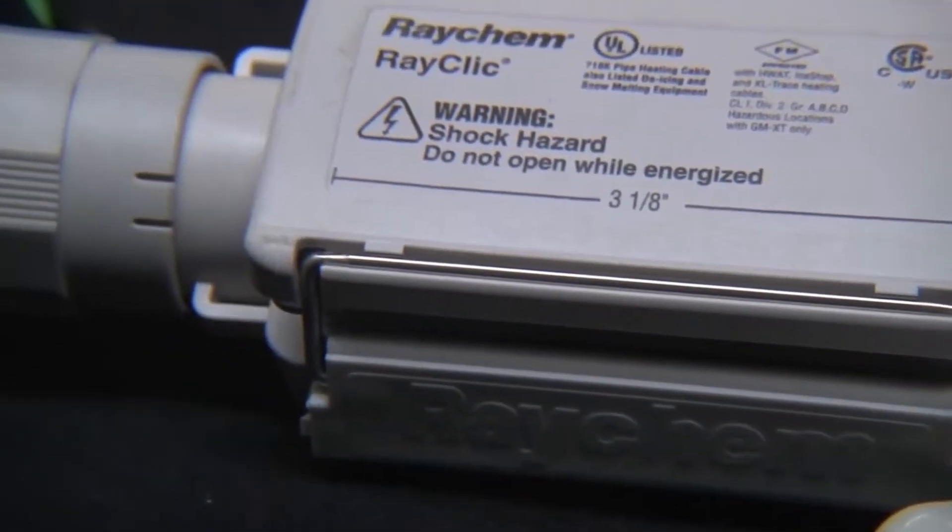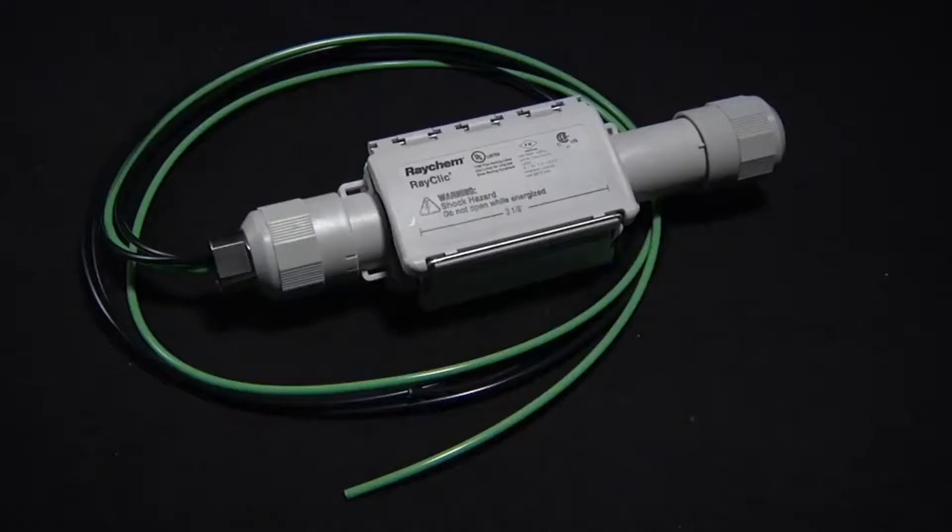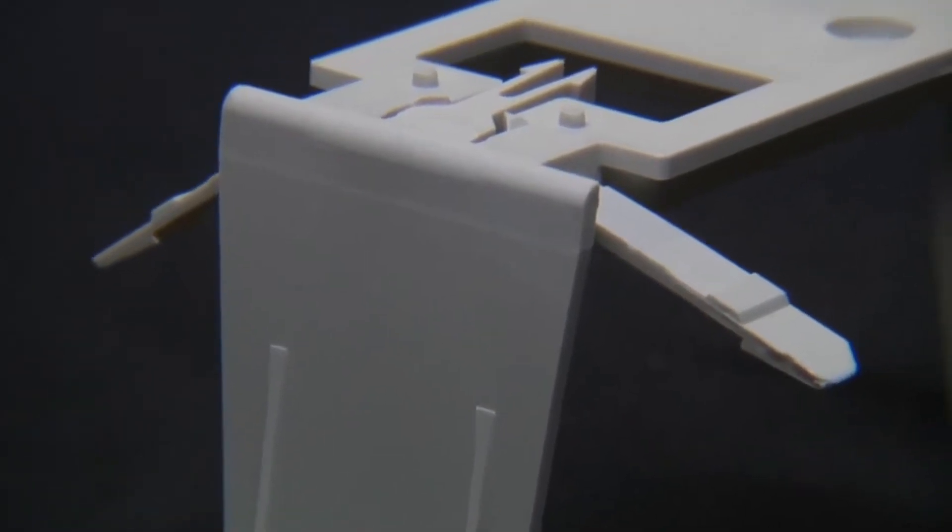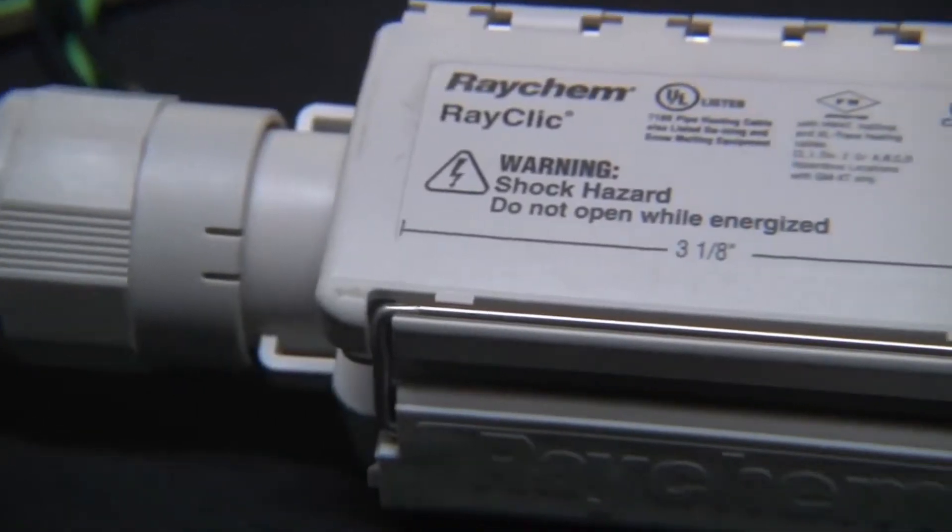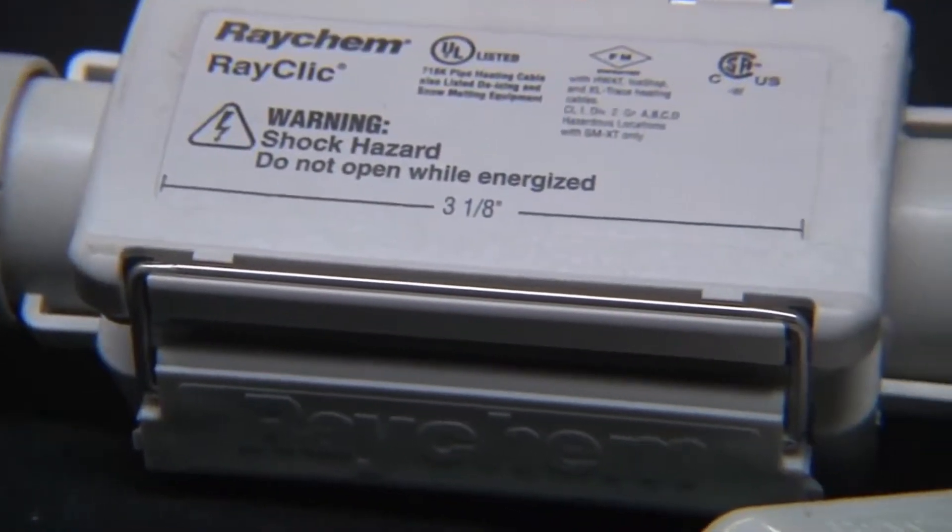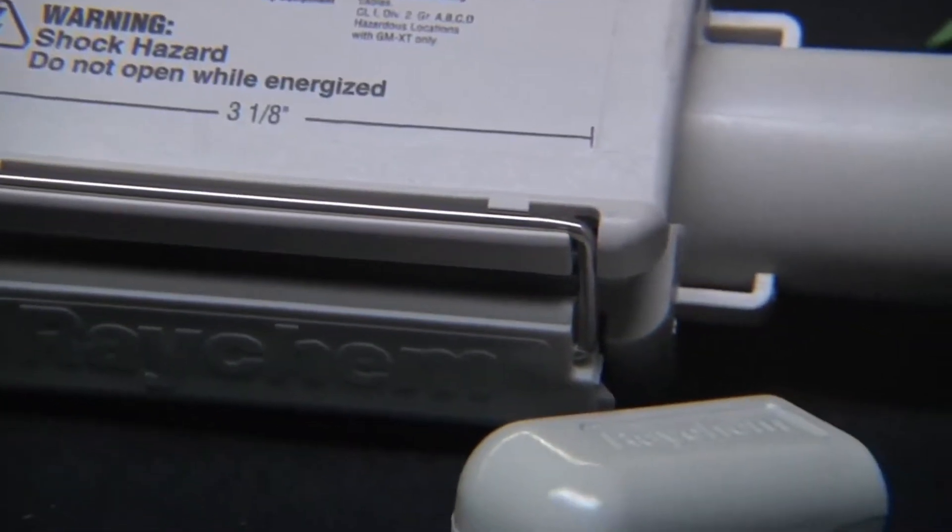In this video we will review the proper installation procedure of a RayClick PC-powered connection kit, including the mounting of a pipe bracket and the installation of an end seal. Note that there are various different types of RayClick components, all of which follow a similar installation procedure.